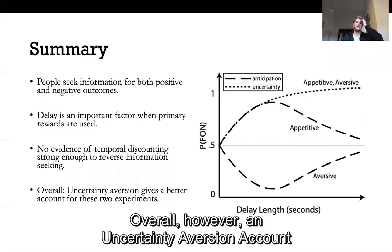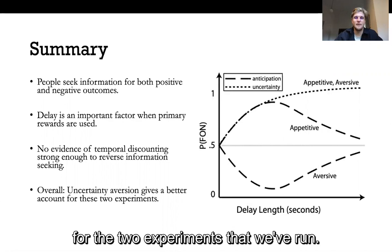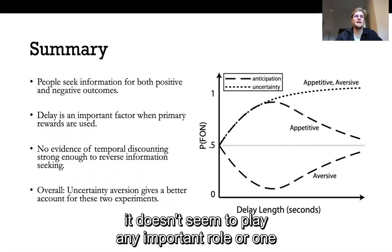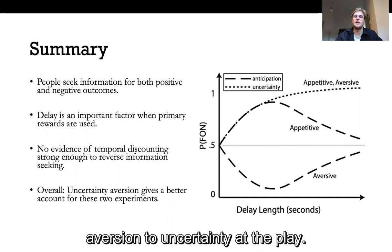Overall however an uncertainty aversion account did give a better explanatory account of the data for the two experiments that we've run. This does not rule out that anticipation, both savoring and dread, play an important role in people's information seeking but in these two tasks here it didn't seem to play any important role or one over and above what aversion to uncertainty had to play.